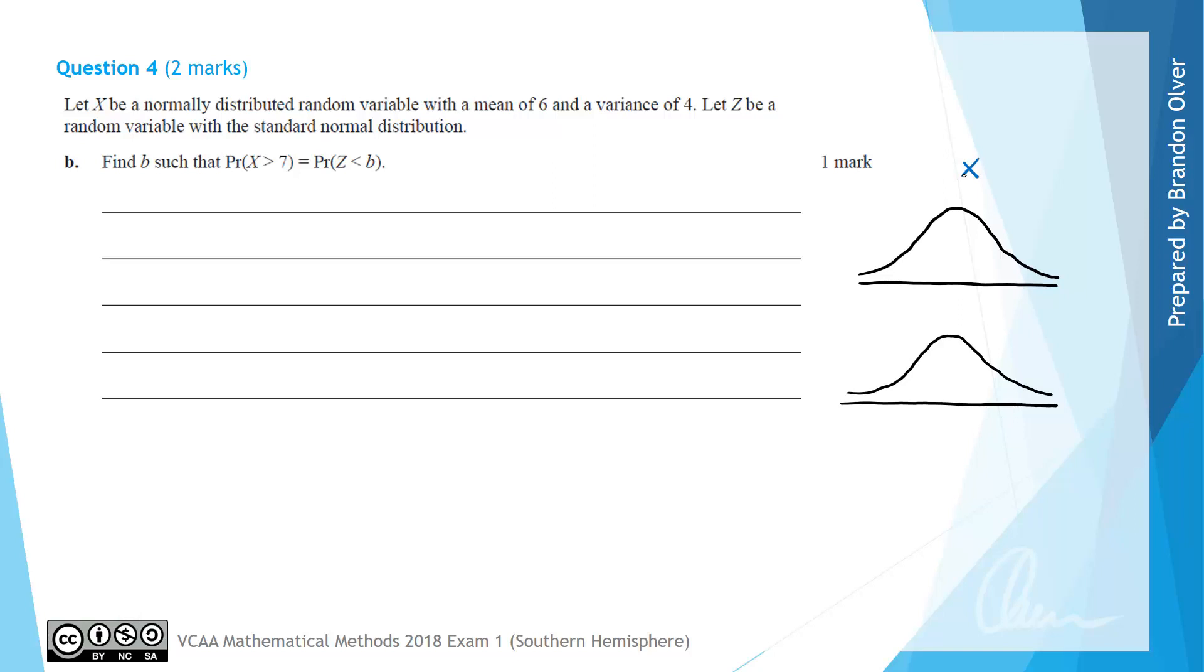For the first one, this is going to be X and we know that it is normally distributed with a mean of 6 and a variance of 4. So that means that this value here is the mean, so it is 6. This value here would be 8. This value here would be 10 if we go one standard deviation up and down at a time, so this would be 4 and 2. We are interested in the probability that X is greater than 7, so 7 would lie around here and this is the probability of X being greater than 7.